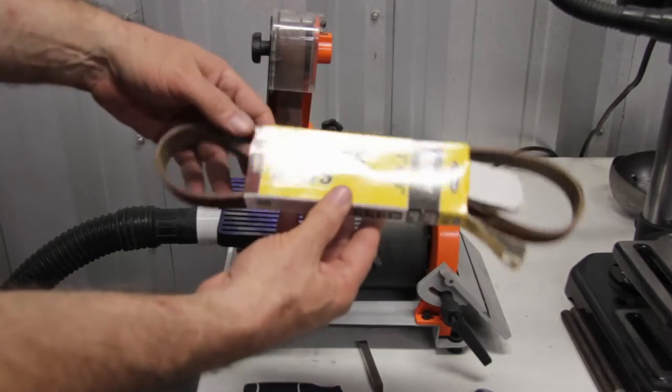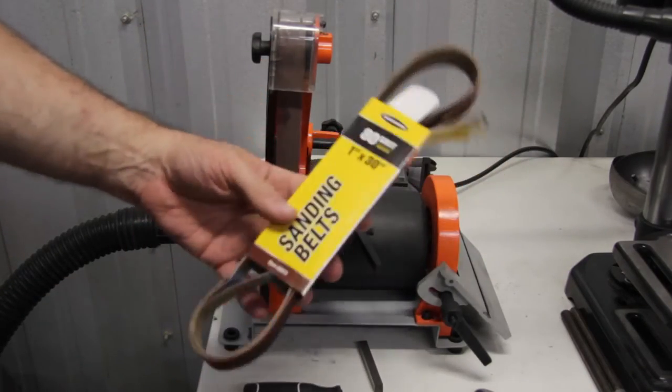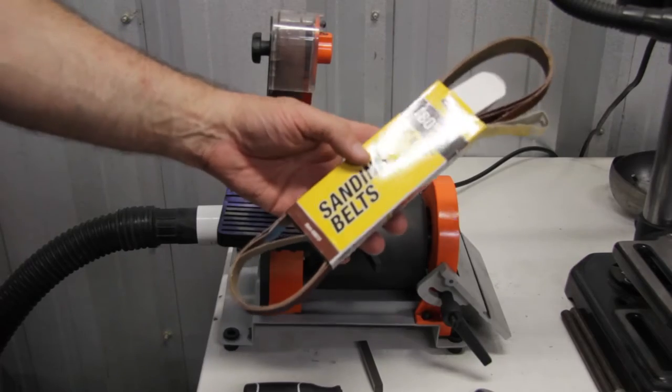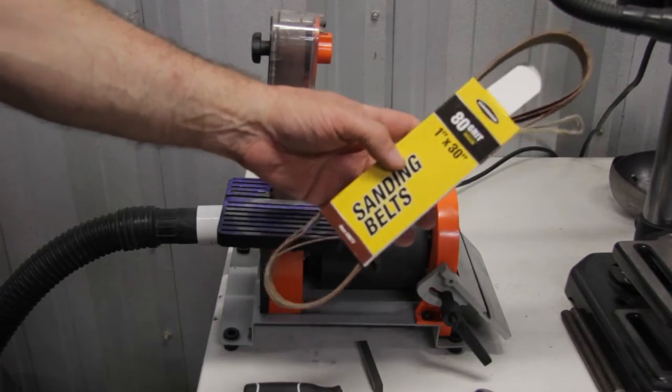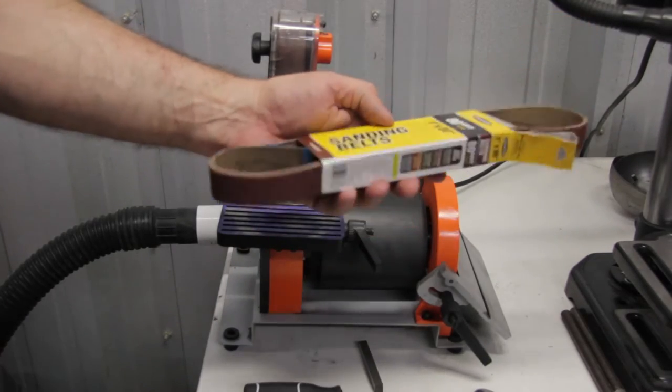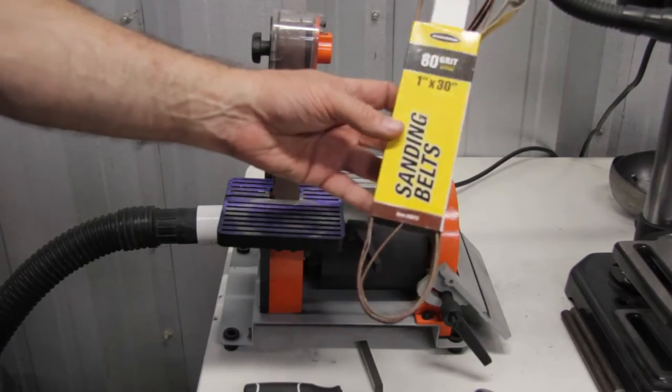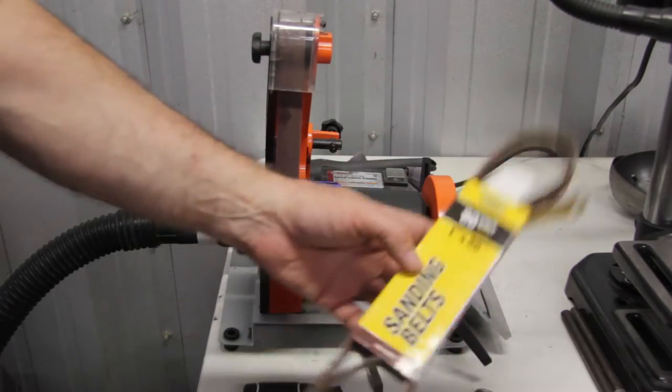Sanding belts I pick up from Harbor Freight. They're very inexpensive. I use 80 grit, 120 grit. For tungsten electrode grinding, I use 80 grit. The belts are rather inexpensive and they last a fairly long time.